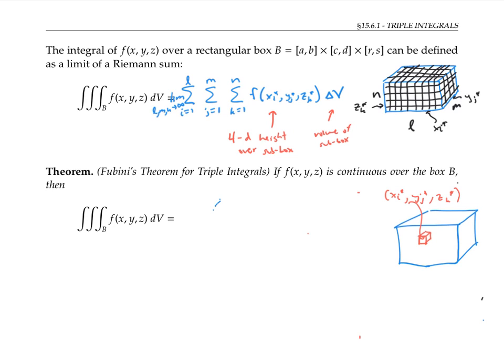But when we go to actually computing triple integrals, we'll rarely use the Riemann sum. Instead, we'll compute them as iterated integrals, just like we did for double integrals. So we'll integrate one variable at a time.